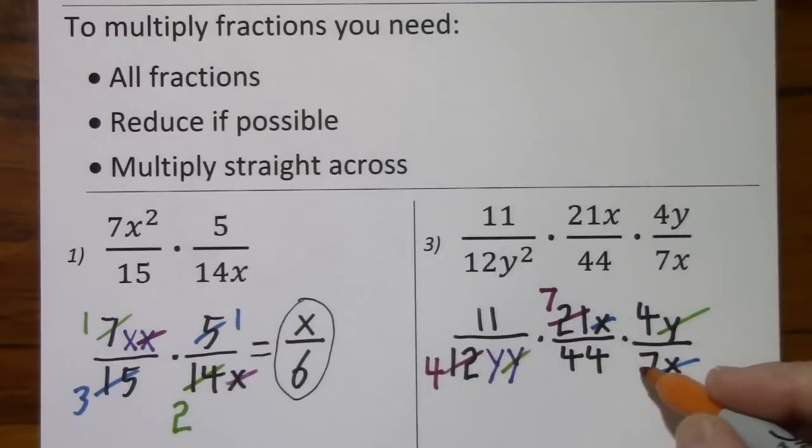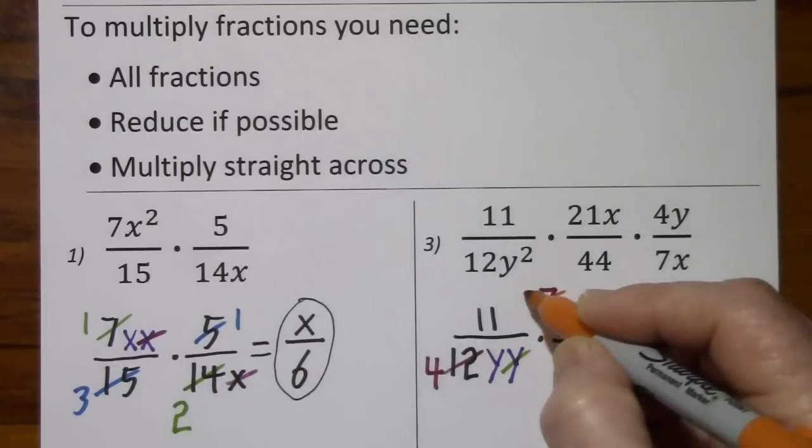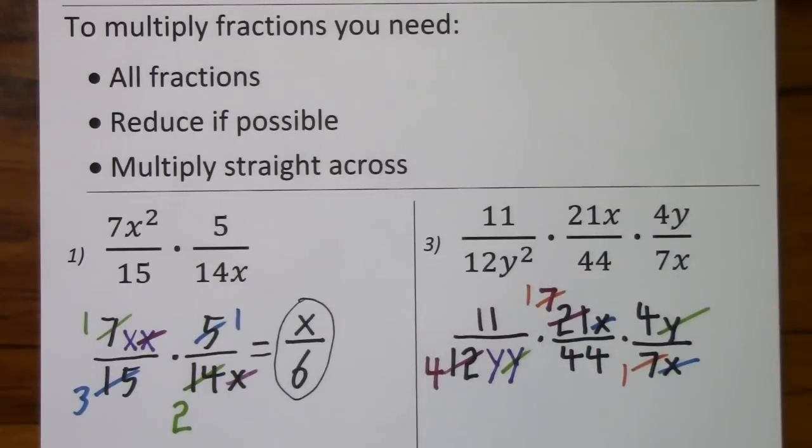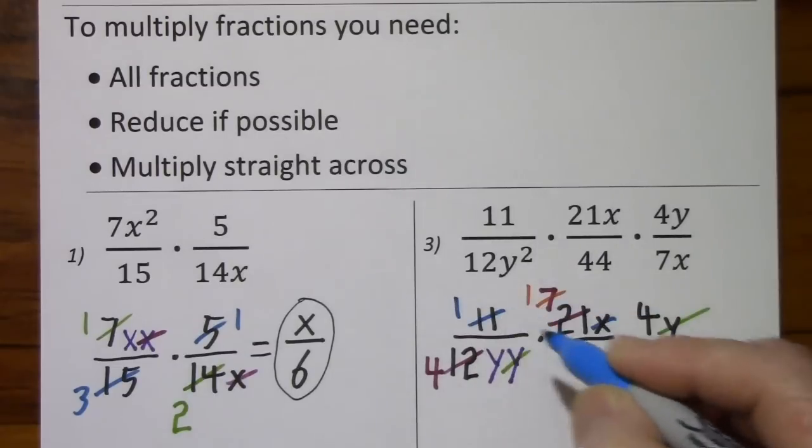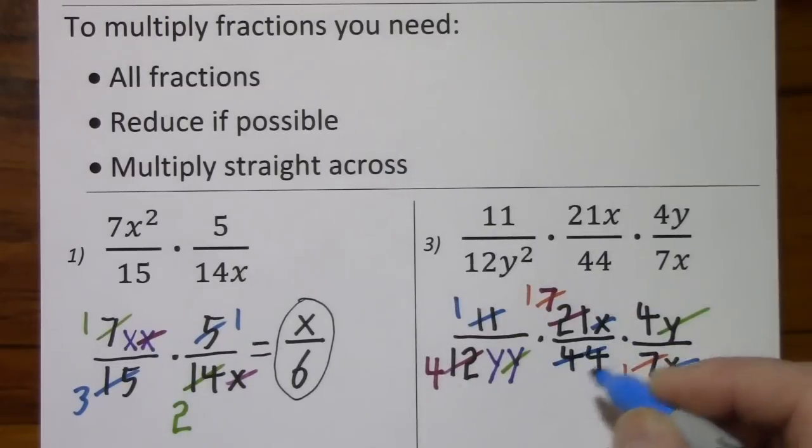7 and 7 is pretty easy to spot. 7 goes into 7 once, 7 goes into 7 once. And we have 11 and 44 here. So 11 goes into 11 once, 11 goes into 44, 4 times.